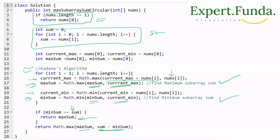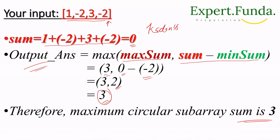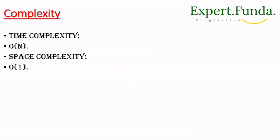Let's verify: our max_sum is 3, total_sum is 0, and min_sum is -2. So total_sum - min_sum = 0 - (-2) = 2. max(3, 2) = 3. We correctly get 3 as the maximum circular subarray sum.